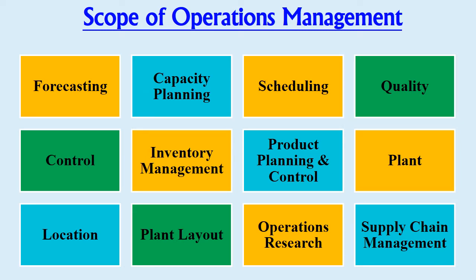Next is scheduling. The scheduling problem involves the allocation of various tasks, services, and materials in order to obtain the desired result — that is, to convert inputs into outputs. After that comes quality control, which is an important aspect. Quality stands for the standardization or the characteristics of the product that is required to be produced. It also depends on the raw materials used, and various quality control techniques are used to maintain high quality standards.